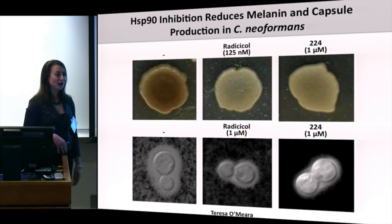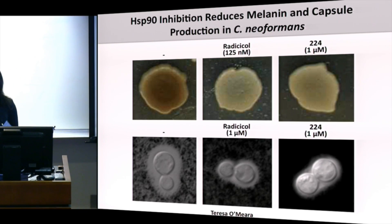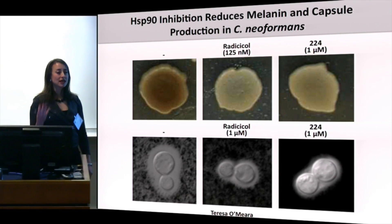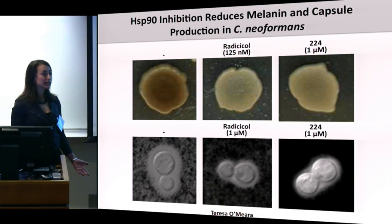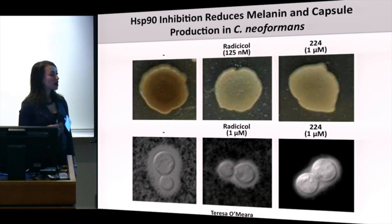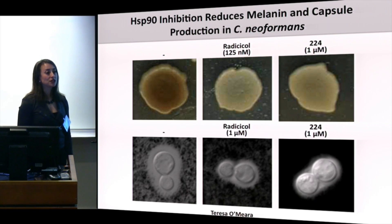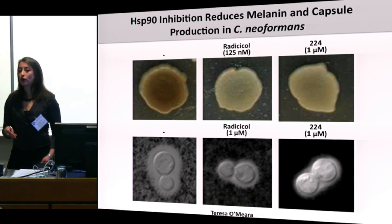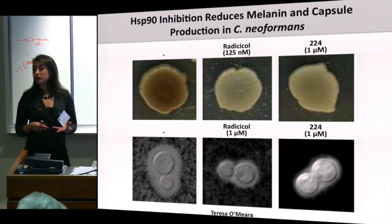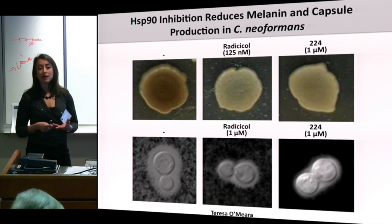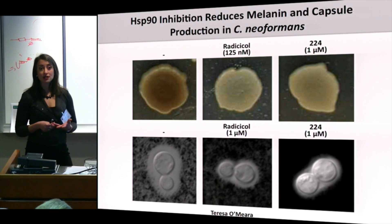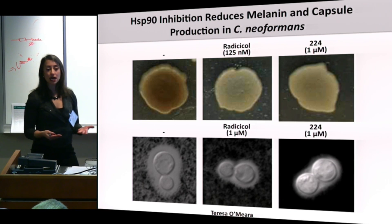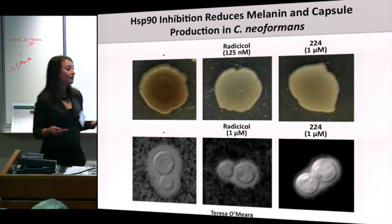We've just submitted an NIH grant and hope to gain funding for this program. Before closing, another important consideration in drug development is how resistance can emerge. Combinations have advantages and can minimize resistance emergence in a couple of ways: requiring multiple mutations to confer resistance, and minimizing pathogen population size by more effectively killing, which reduces the probability of resistant mutants arising.